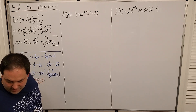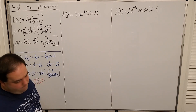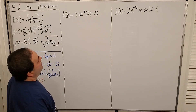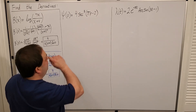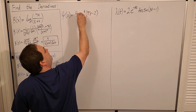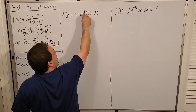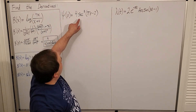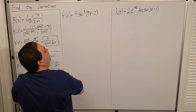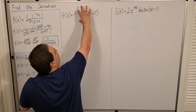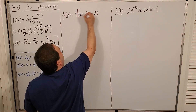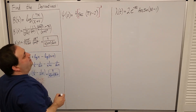Next: ψ(p) equals 4 secant cubed of (πp minus 2). Remember, secant is a function, cubed is a function, and (πp minus 2) is inside the secant, which is inside the cube. With trigonometry, the exponent here is shorthand meaning the cube is on all of secant(πp minus 2) — so think of it as the whole thing cubed.